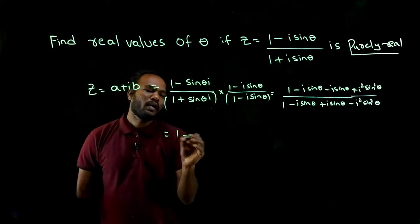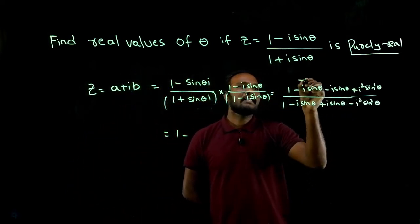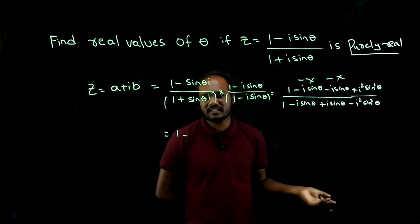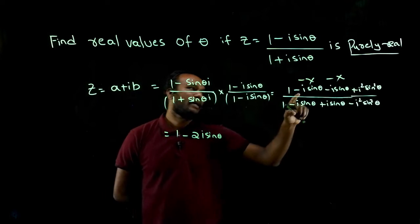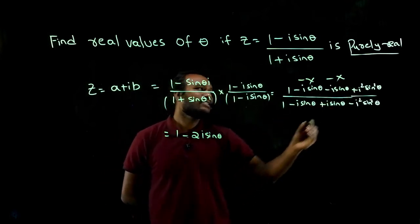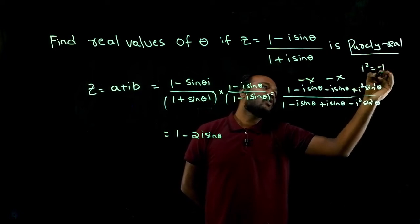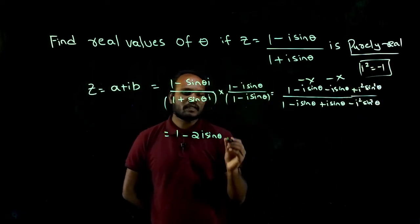Next, see here. One minus, minus i sine theta minus i sine theta. Minus times minus is what? Minus two times. So minus two i sine theta. i square value is what? Minus one. What is i square value? Minus one. So i square value is minus one, so minus sine square theta.